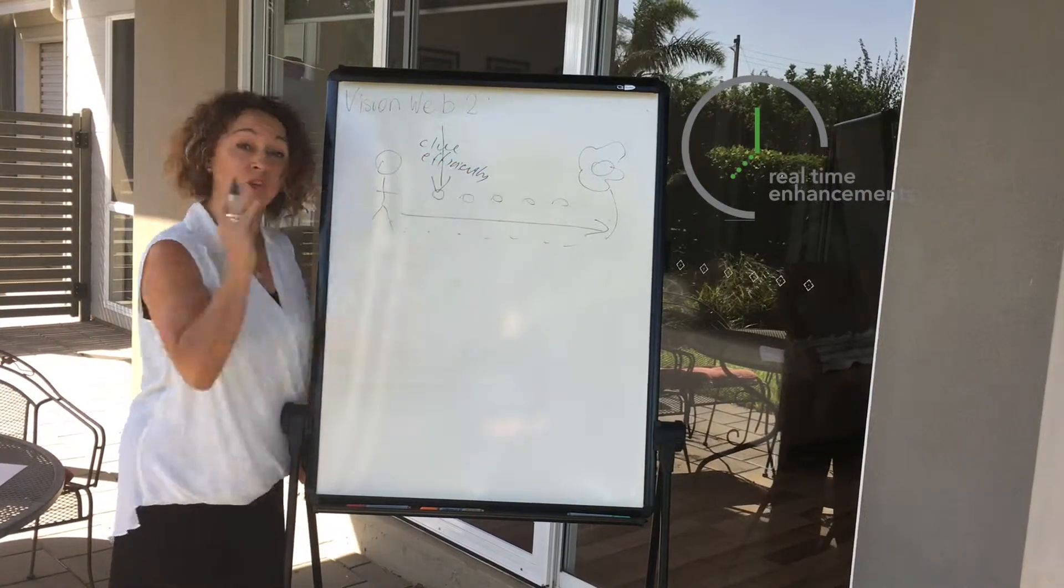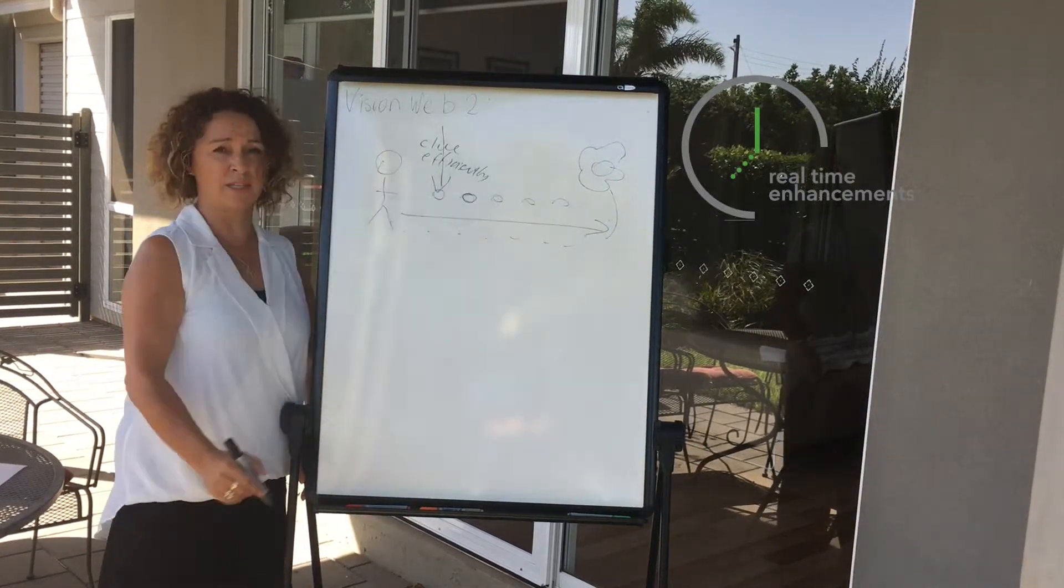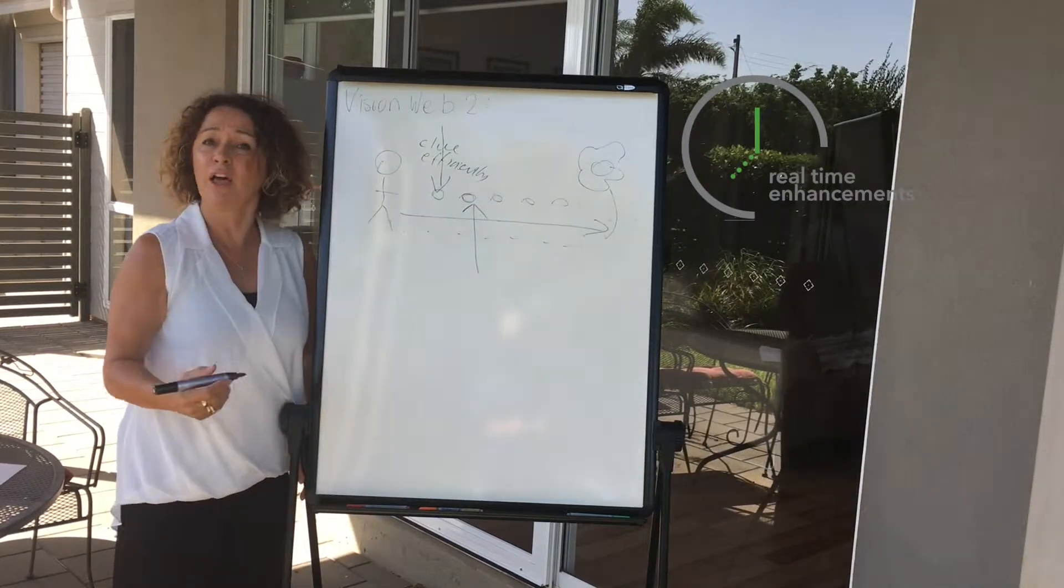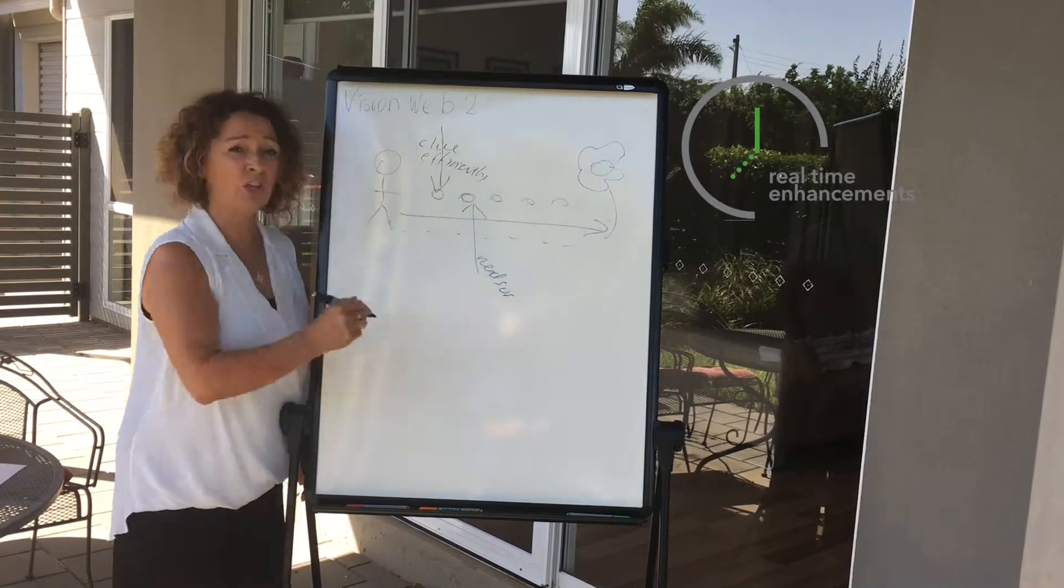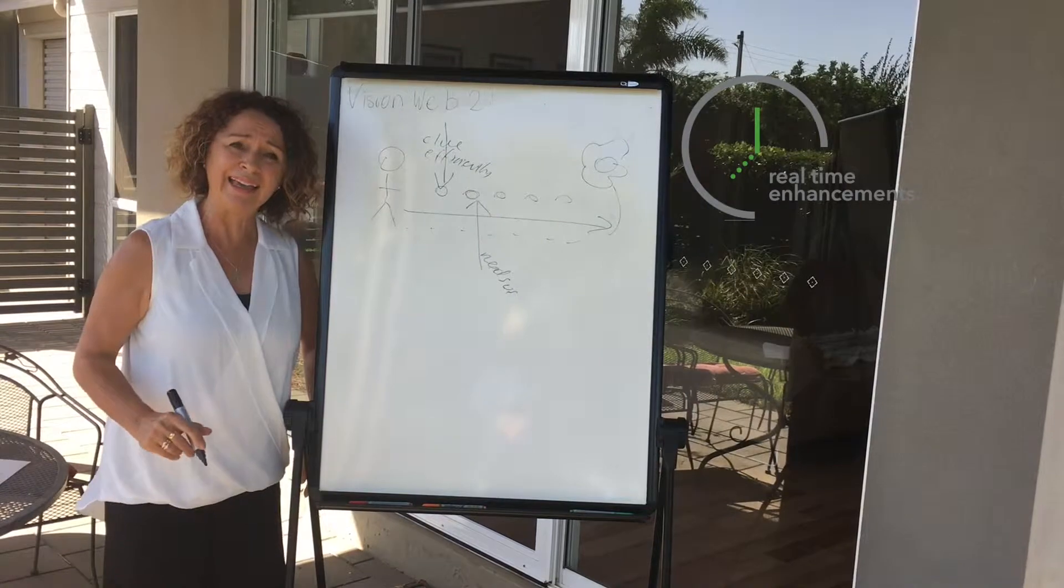But we don't notice it because we're full steam ahead. And then what happens is something else comes in, and it might be that a family member or a loved one needs us. And you know what, they do need us, but I have to get to the goal. And so,